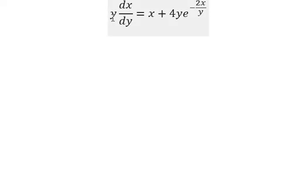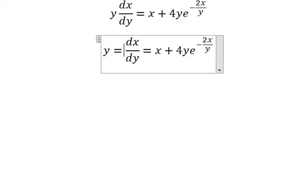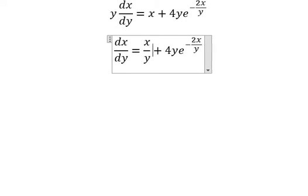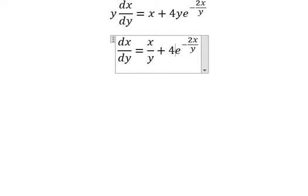We need to divide both sides by y. Y divided by y, you get 1. We have x over y, x over y.